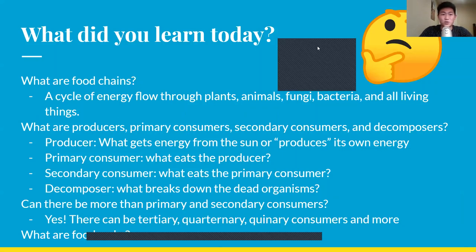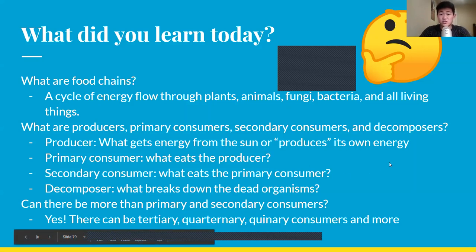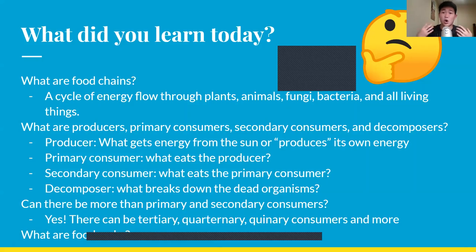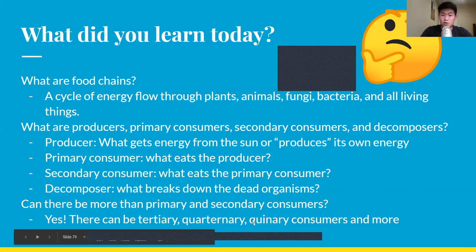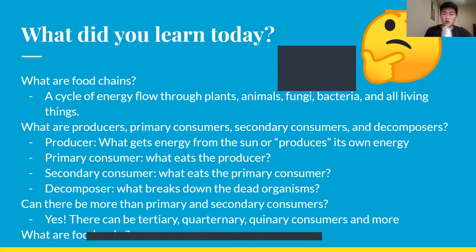Quick summary of what you learned today. Food chains are a cycle — a flow of energy through plants, animals, fungi, bacteria, and all living things. You learned about producers, primary consumers, secondary consumers, and decomposers. Producers get their energy from the sun and produce their own energy. Primary consumers eat the producers. Secondary consumers eat the primary consumers. Decomposers break down dead organisms. There can also be tertiary, quaternary, quinary consumers, and more — in real life things are very complex and interesting.